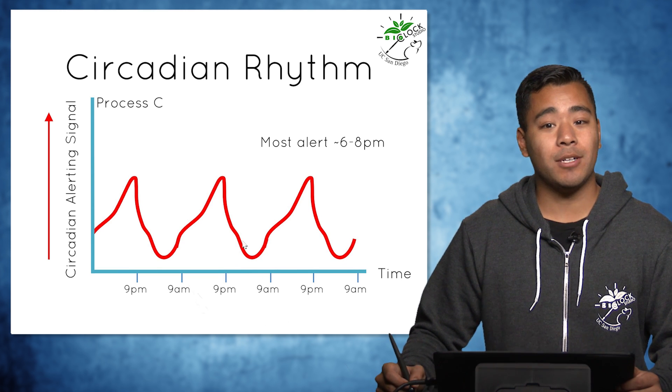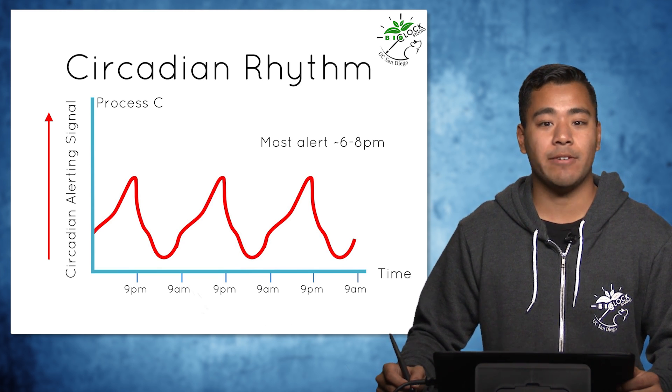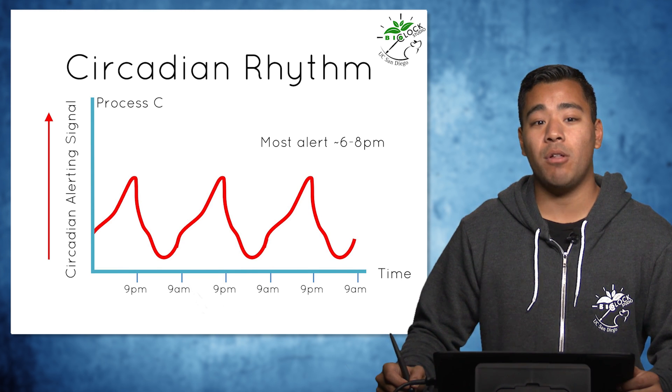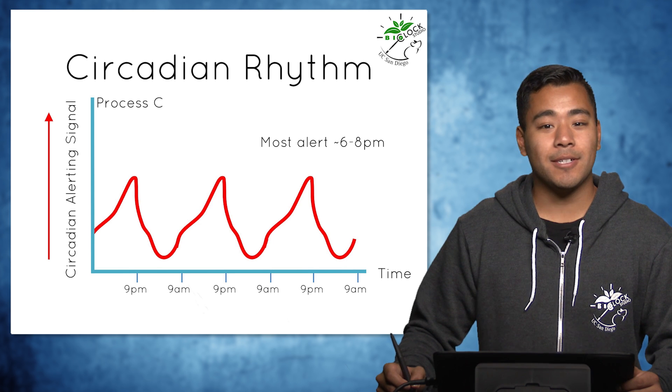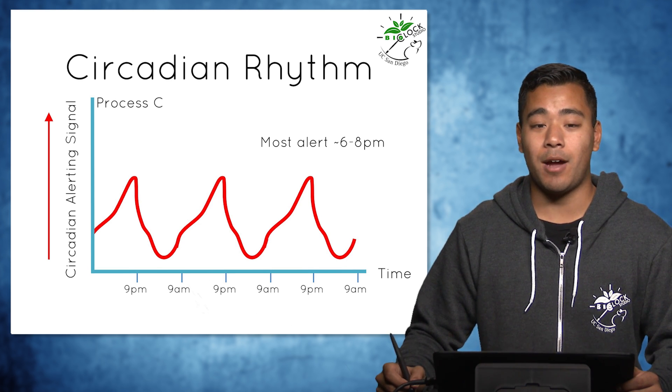This rhythm repeats itself from one day to the next and is distinct from a sense of sleepiness that is related to how long a person has been awake. Process C explains why you can get a second wind even though you are sleep deprived.